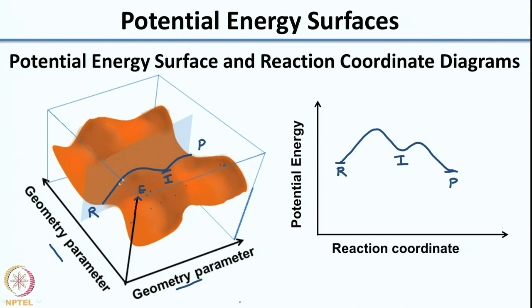The reaction coordinate is the lowest energy path for your reactant to take. Using the analogy: if R is Mumbai and P is Pune, the potential energy surface is all the ghats and mountains in between, and the reaction coordinate is the quickest path from Mumbai to Pune. When you slice it, you get a 2-dimensional plot — the reaction coordinate diagram — where peaks correspond to valleys in the potential energy surface.